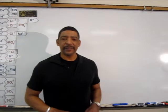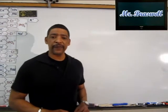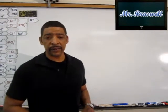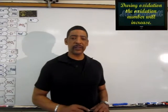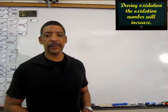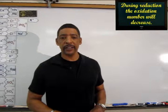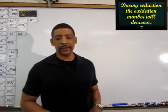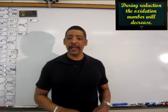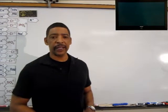Hi, Mr. B here. Identifying oxidation and reduction half reactions can be quite simple. If the oxidation number of an element increases during the course of a chemical reaction, then that element has undergone oxidation. Conversely, if the oxidation number of an element decreases during a chemical reaction, then that element has undergone reduction. In this video, I'll explain how to determine whether a half reaction is an oxidation half reaction or a reduction half reaction.